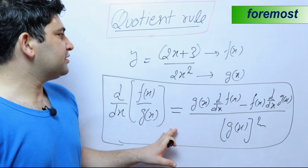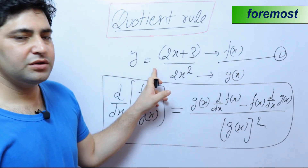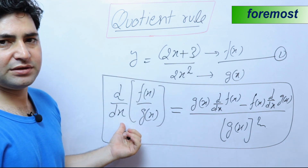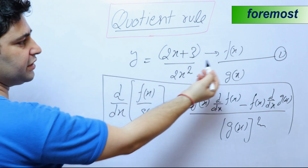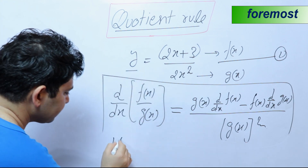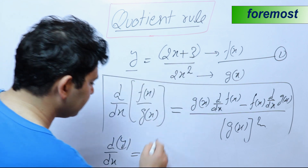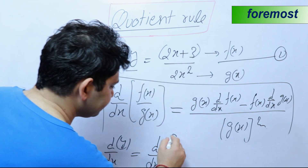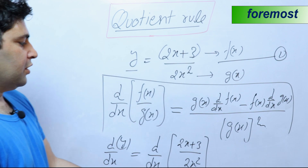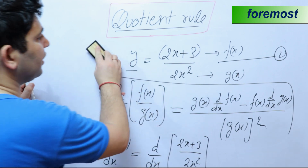Now let us apply this rule for this function y — let it be equation number 1. To apply this, let us differentiate equation 1 with respect to x. We get d/dx of y is equal to d/dx of 2x plus 3 divided by 2x squared. Now we will apply this rule here.